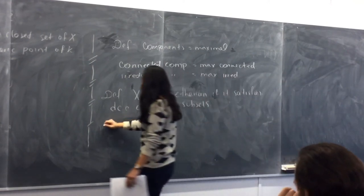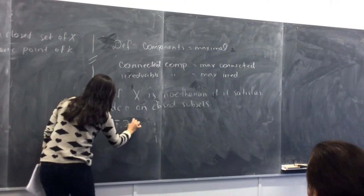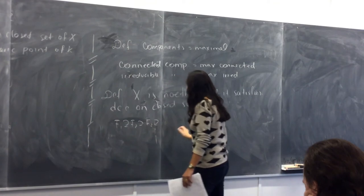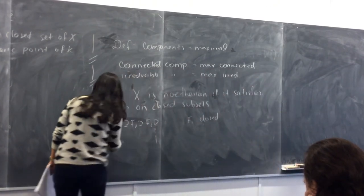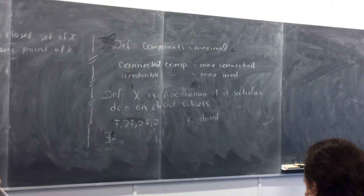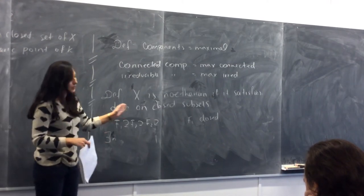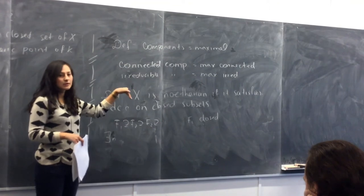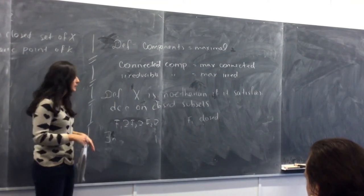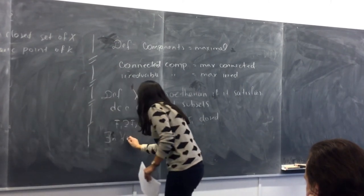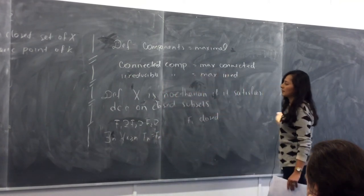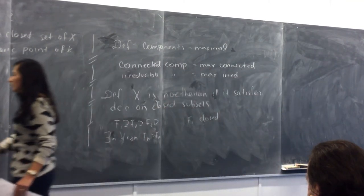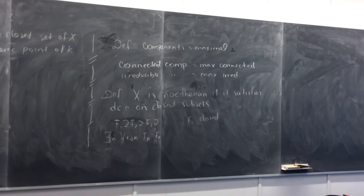By stabilize we mean there exists n such that for all k ≥ n, Fₙ = Fₖ. So some of them can be equal, but at some point all of them are going to be equal.